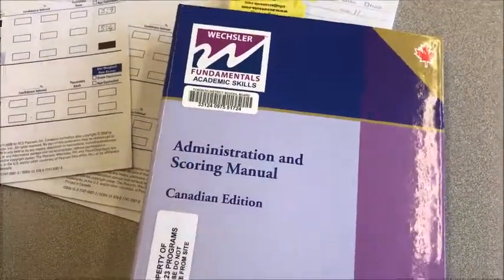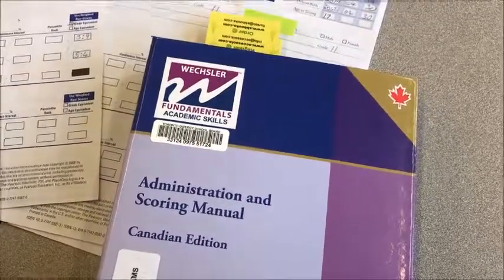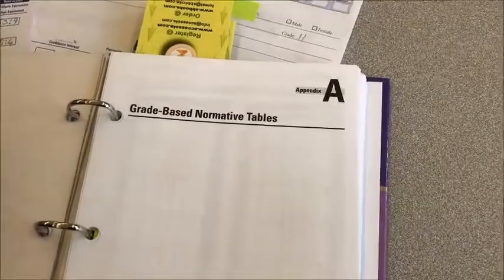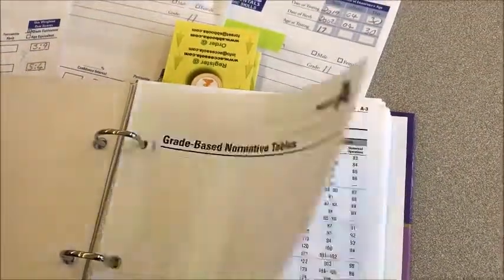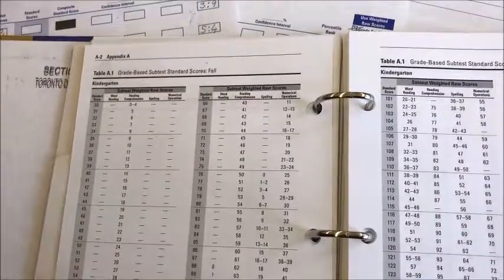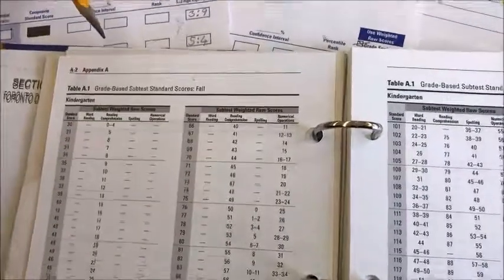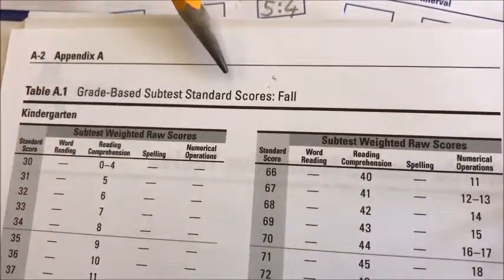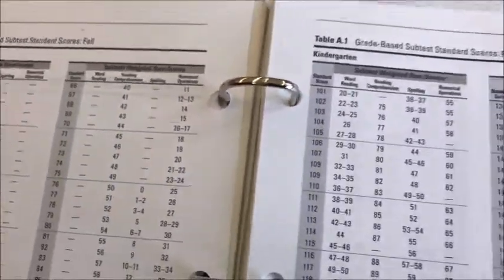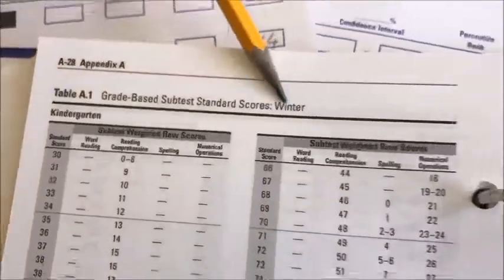So this is where we need to refer to the administration and scoring manual. You need to turn to the section where the tab says appendices. In this section you have all of the tables that refer to the standard scores. This section is actually organized into three terms: fall, winter, and spring.